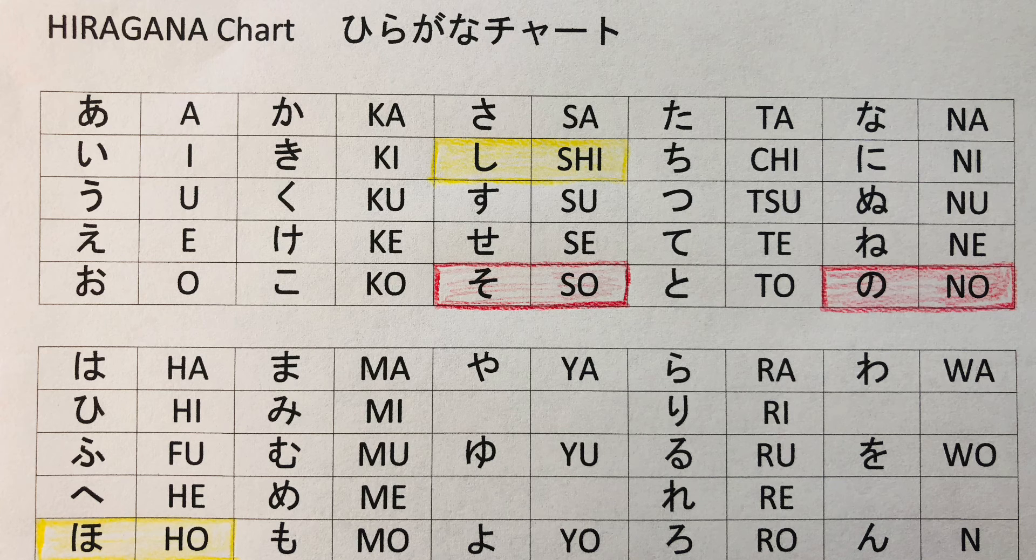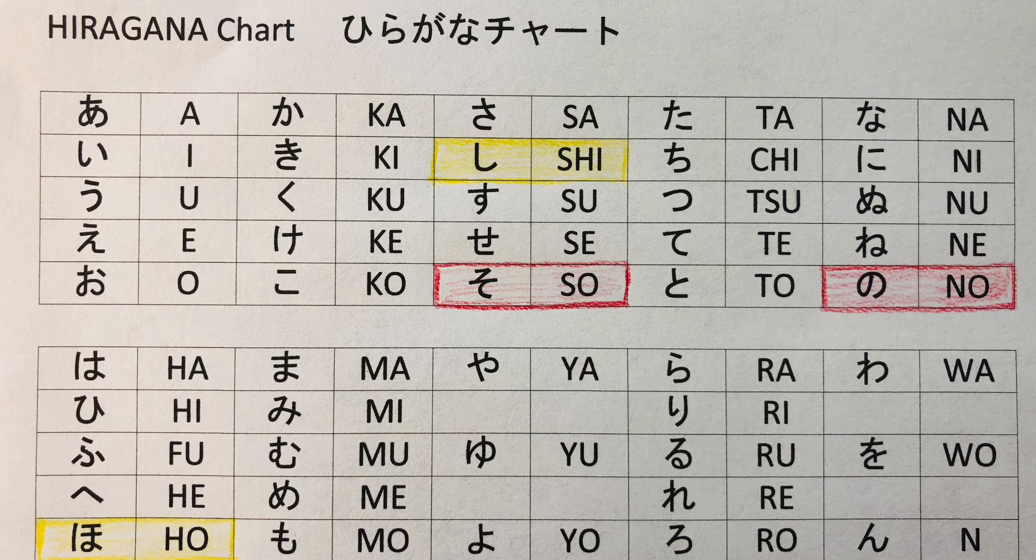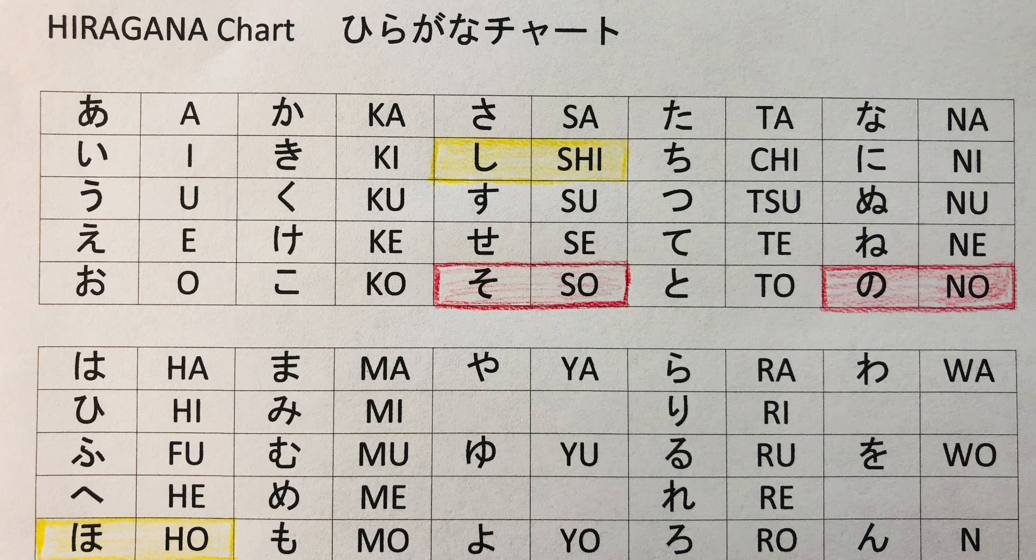So, hiragana is a syllable. All Japanese can be written in hiragana. So, if you learn hiragana everything, you can write all Japanese. The reality is not only hiragana, but also kanji, that is the most difficult part.